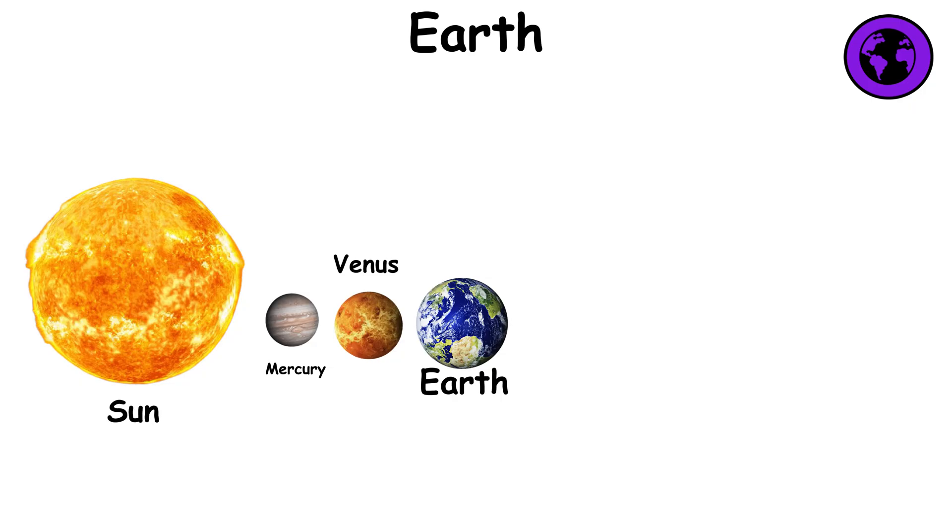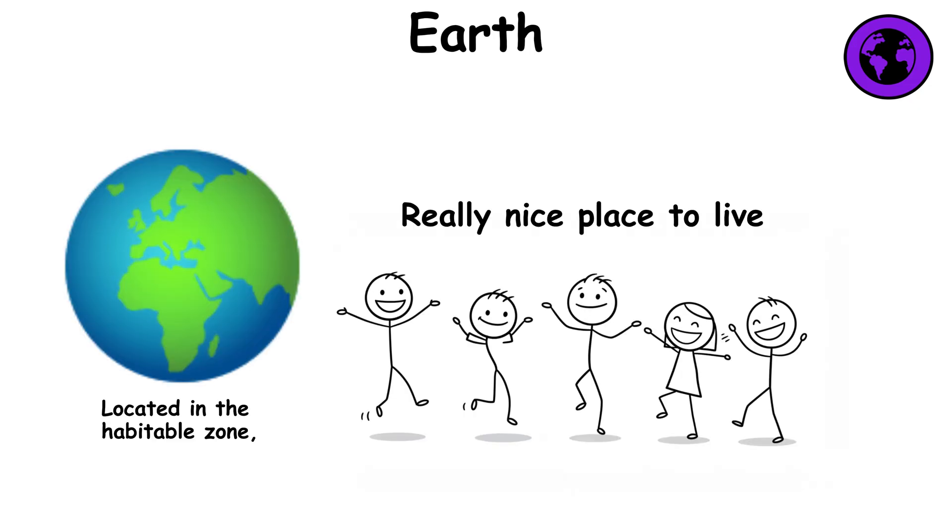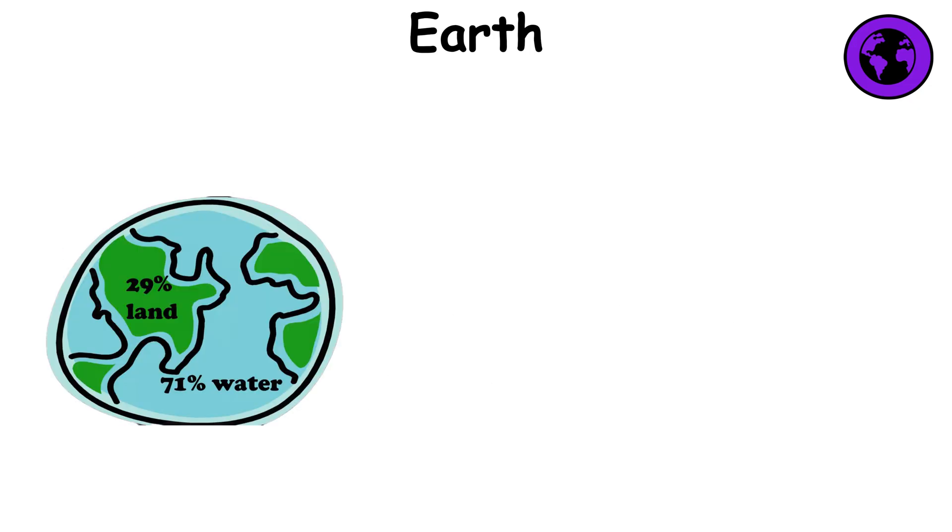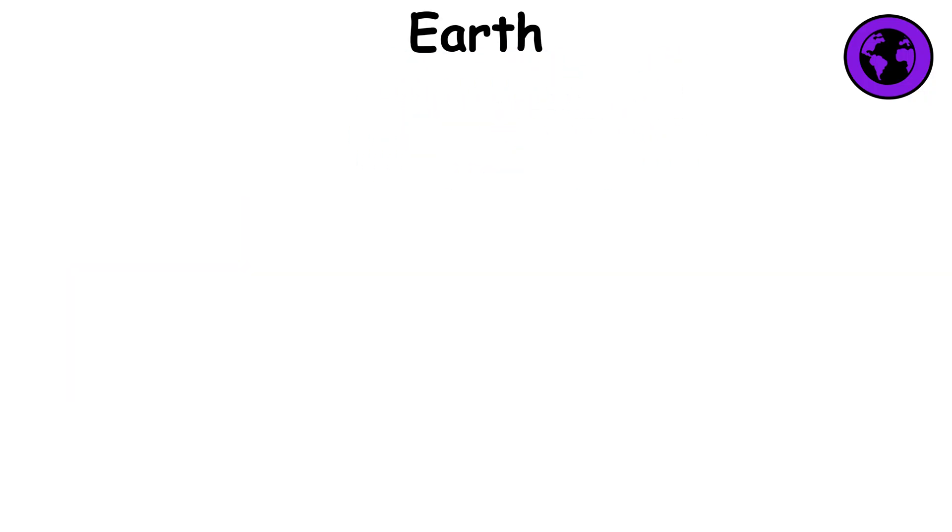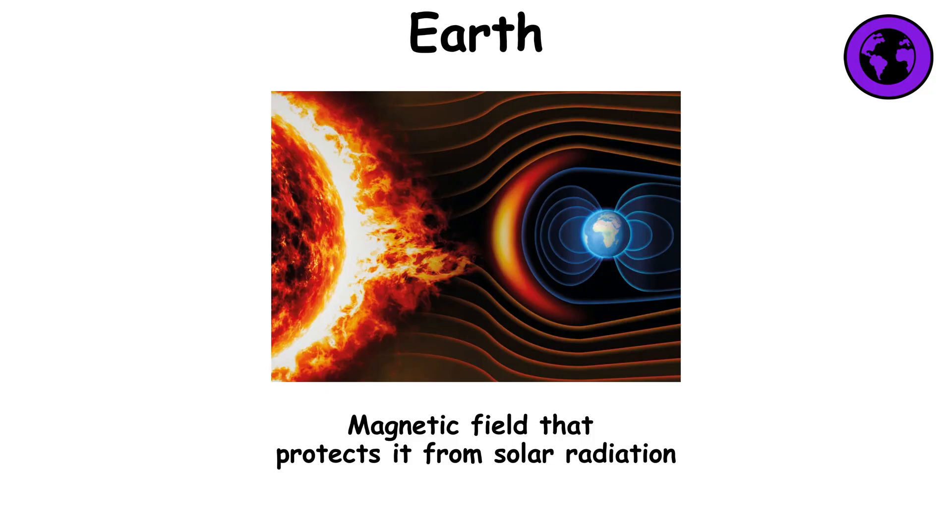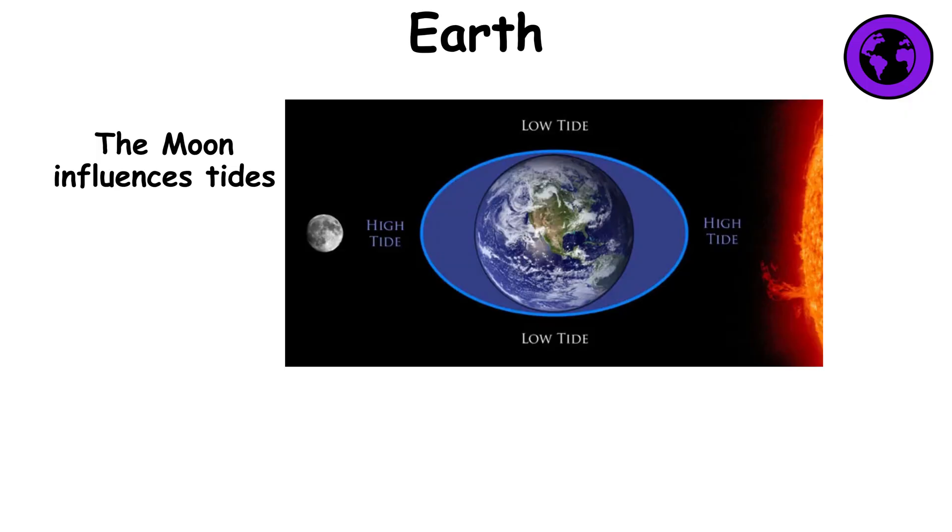Earth is the third planet from the Sun and the only known planet with life. It is located in the habitable zone, where conditions are perfect for life. About 71% of the surface is covered by water, and its atmosphere is rich in oxygen and nitrogen. Earth has a magnetic field that protects it from solar radiation. Its moon influences tides and stabilizes the planet's axis.